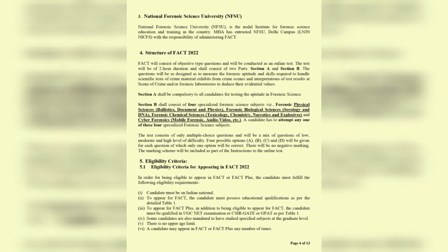Section A will have general forensic science questions. Section B will be the specialization, which you choose according to your eligibility. Specializations include: forensic physical sciences (ballistics, documents, physics), forensic biological sciences (serology and DNA), forensic chemical sciences (toxicology, chemistry, narcotics and explosives), and forensic cyber forensics (mobile forensic, audio, video analysis, etc.)